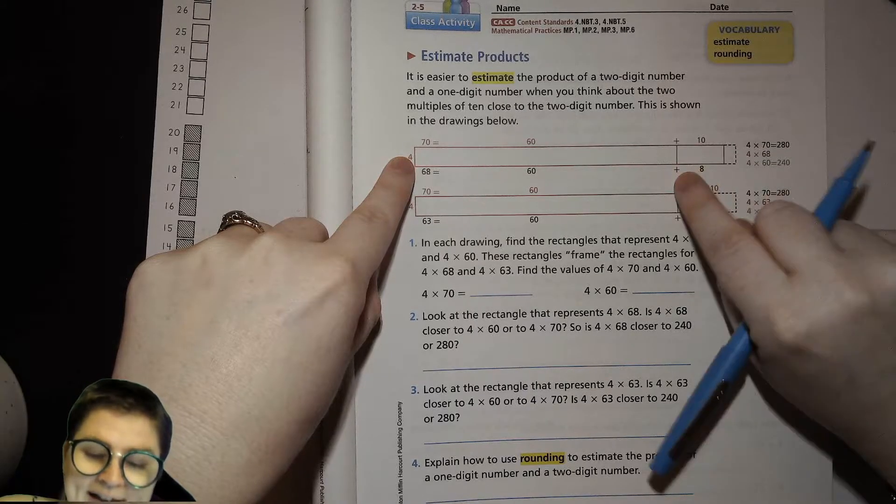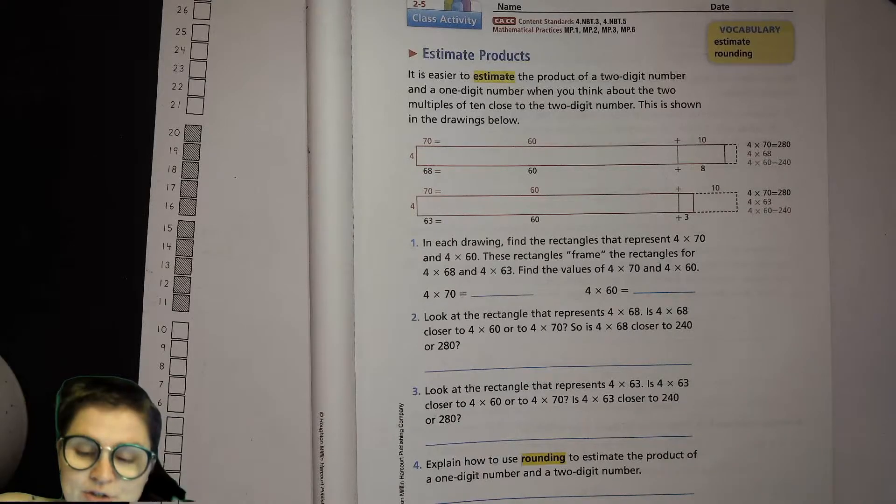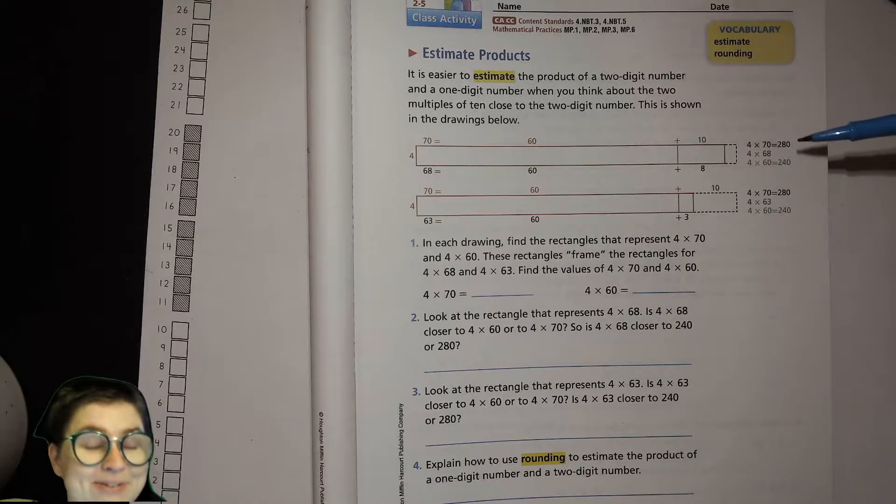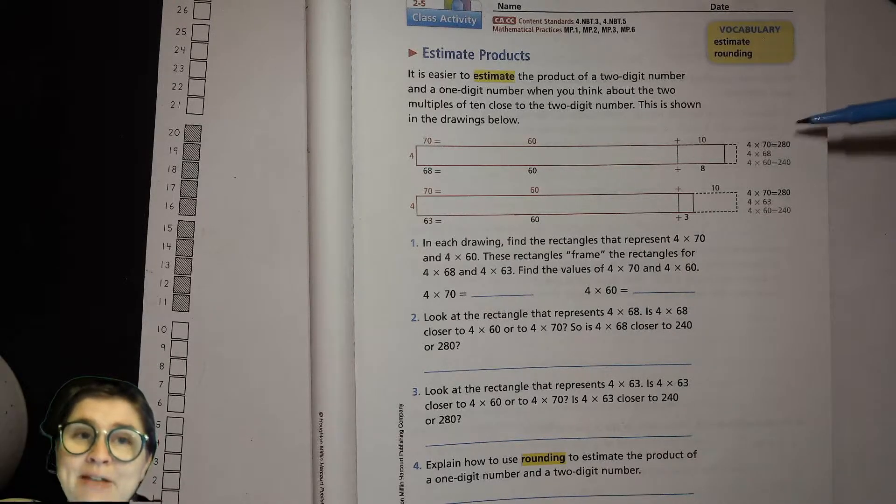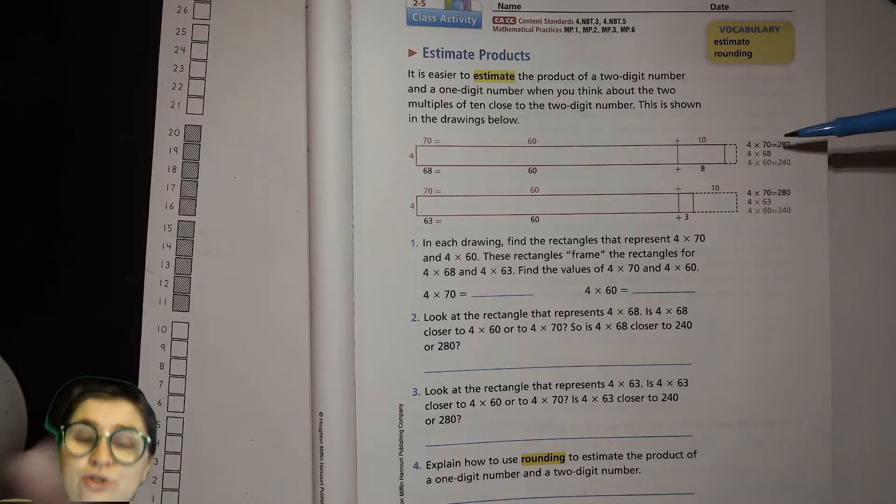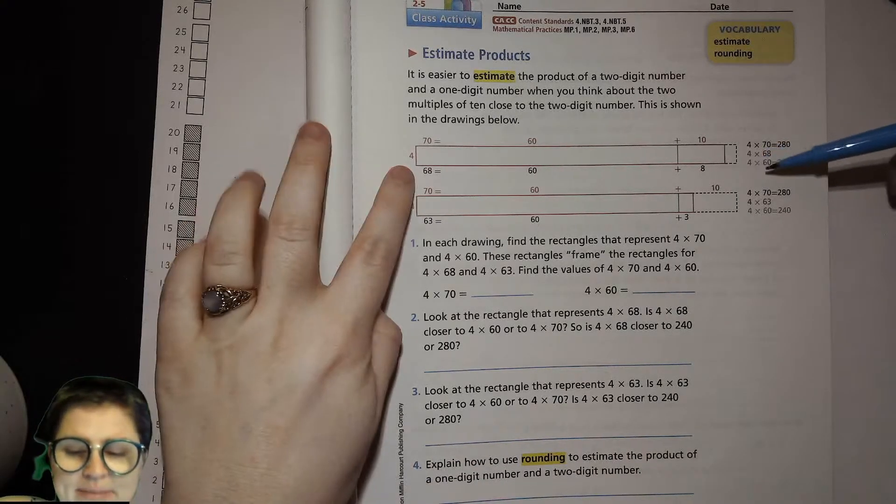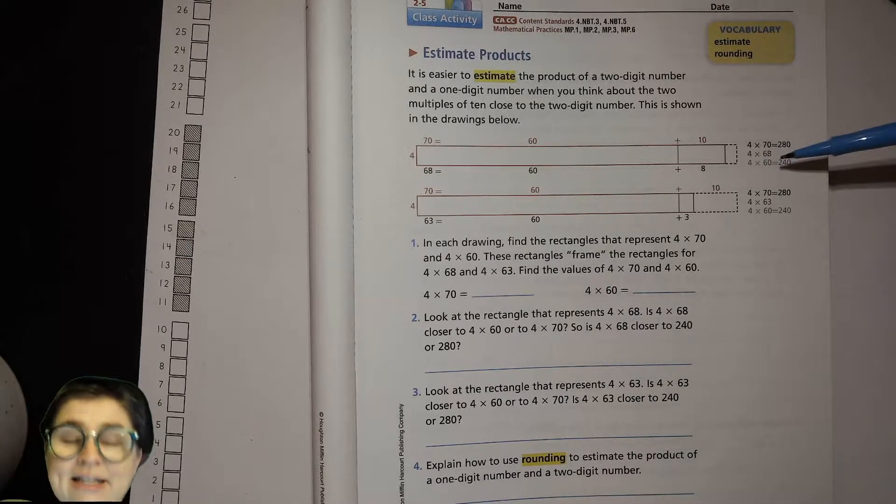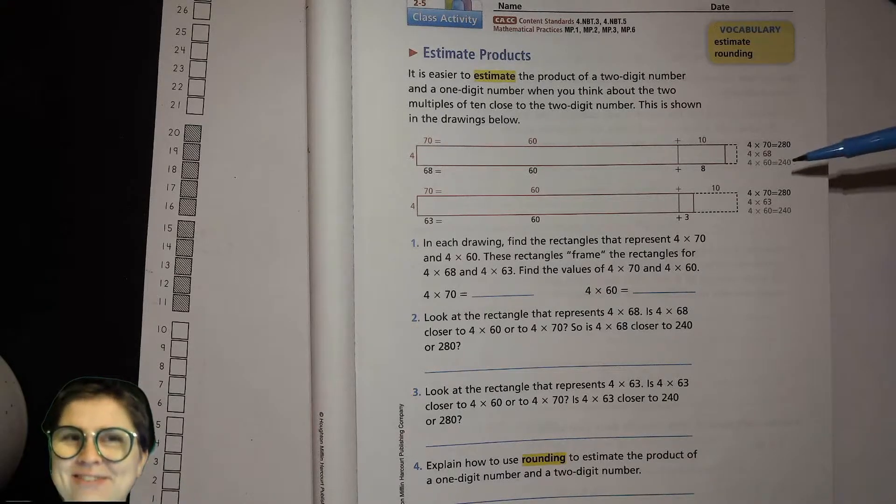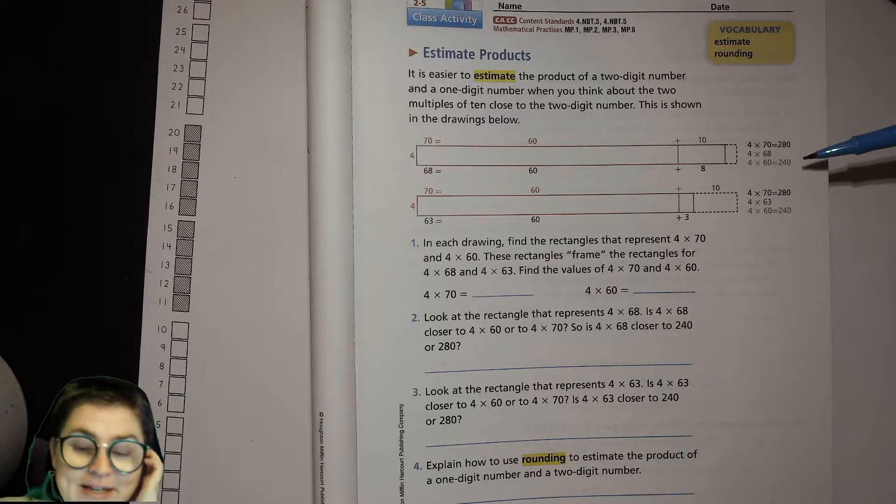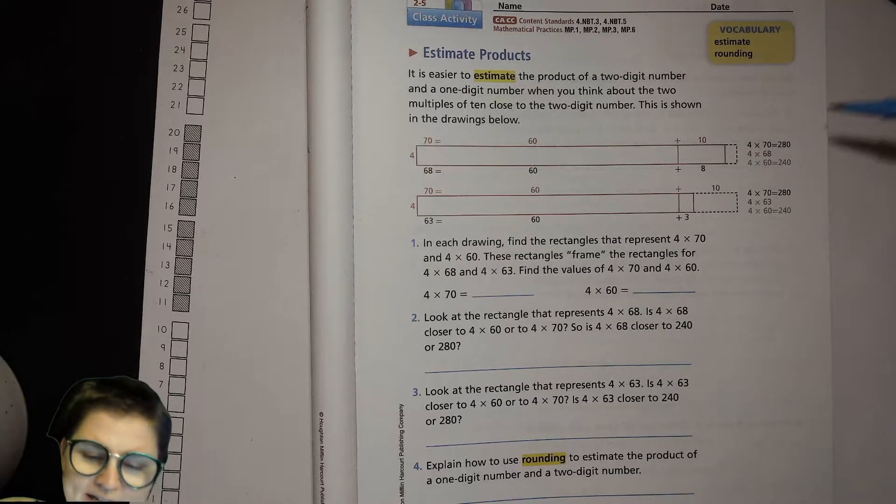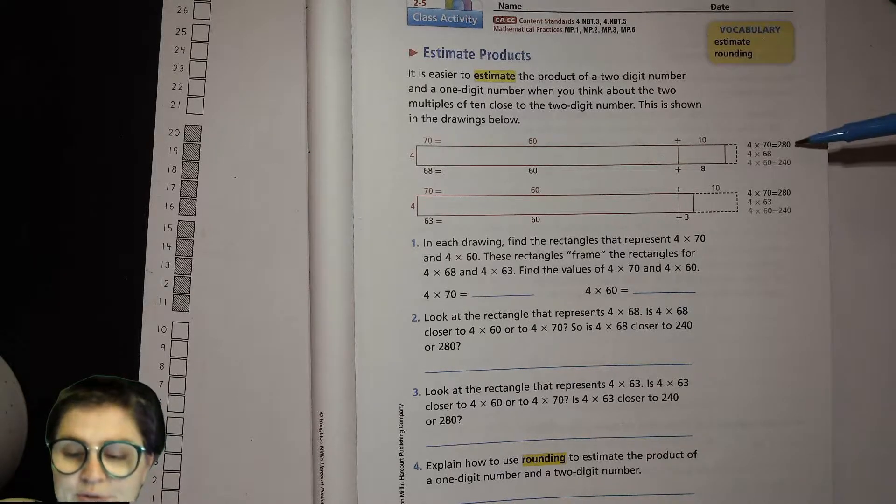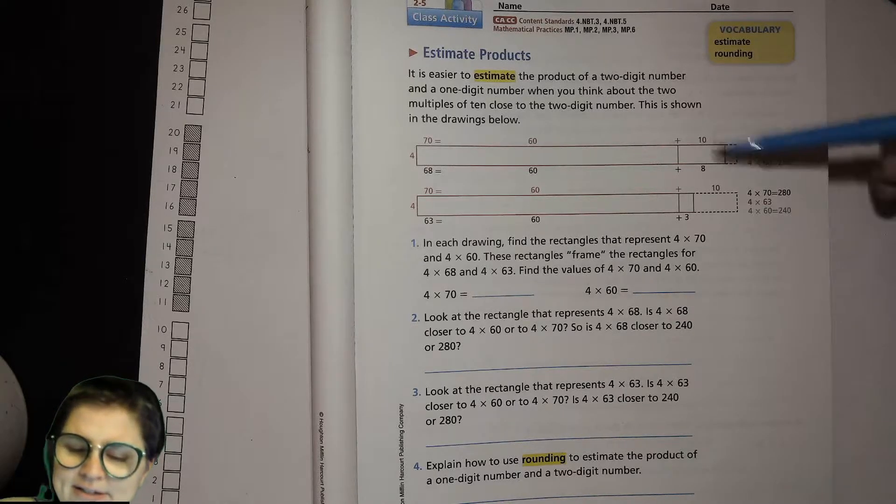So if you think 4 times 70, all you have to do is do 4 times 7 and then multiply it by 10. 4 times 7 is 28, multiplied by 10 is 280. 4 times 60, just do 4 times 6 and then multiply that by 10. So 4 times 6 is 24, so 4 times 60 is 240. Now that's useful because you can expect your answer to be somewhere in between 280 and 240, probably a lot closer to 280.